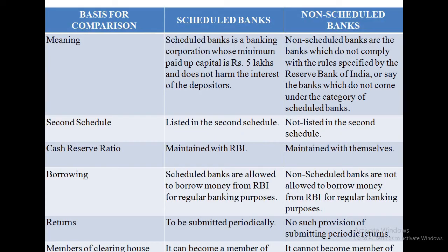Here are the basic comparisons between Scheduled and Unscheduled Banks. A Scheduled Bank is a banking corporation whose minimum paid-up capital is 5 lakh and does not harm the interest of depositors, whereas Unscheduled Banks are banks which did not comply with the rules specified by the Reserve Bank of India, or the banks which did not come under the category of Scheduled Bank.